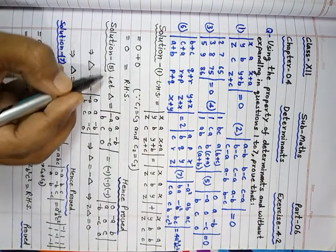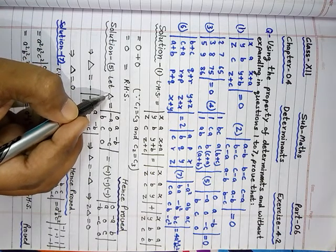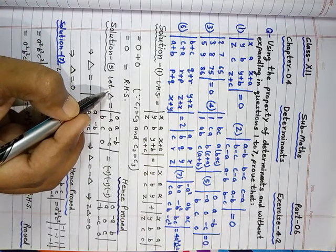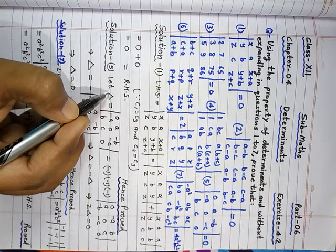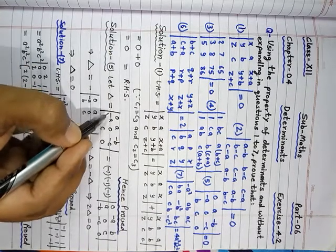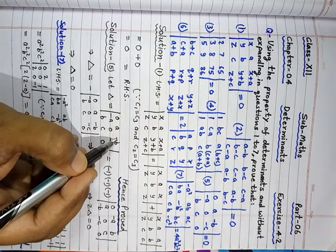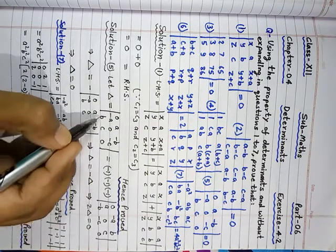Now, solution of the fifth part. The given determinant, let triangle, determinant shown as triangle. It means you represent determinant as triangle. Triangle is equal to 0, a, minus b, minus a, 0, minus c, b, c, 0.